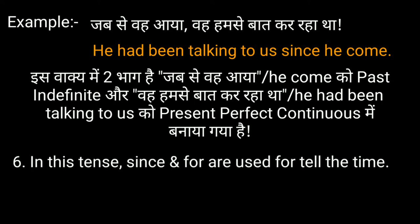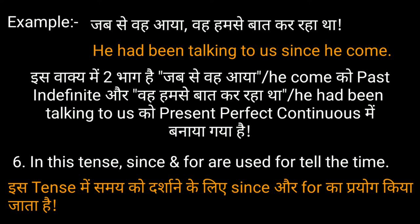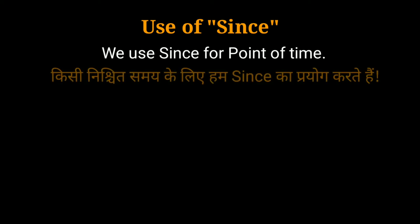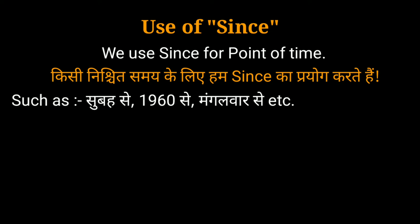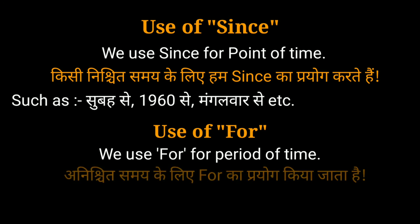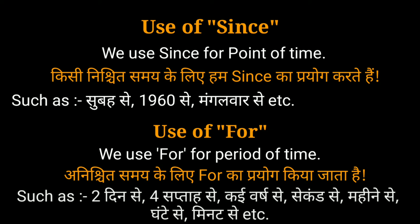Number six: in this tense, since and for are used to indicate time. इस tense में समय को दर्शाने के लिए since और for का प्रयोग किया जाता है. We use 'since' for a point of time — किसी निश्चित समय के लिए, जैसे सुबह से, 1960 से, मंगलवार से. We use 'for' for a period of time — अनिश्चित समय के लिए, जैसे दो दिन से, चार सप्ताह से, कई वर्ष से, सेकेंड से, महीने से, घंटे से, मिनट से. Since और for का प्रयोग किसी भी tense में हो सकता है.